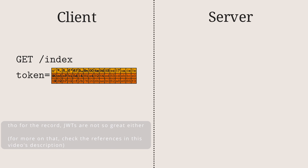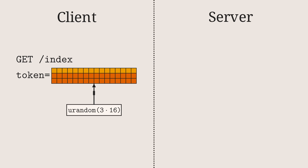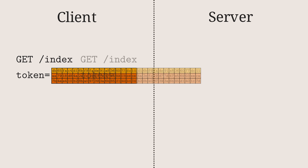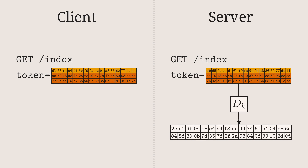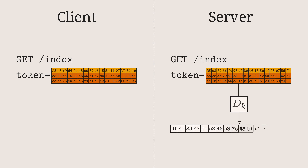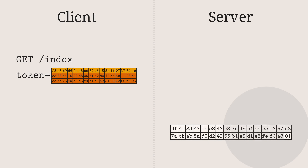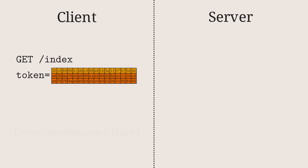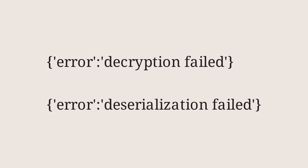What happens if we provide an invalid token? There are two main error cases. The first is when the padding is bad and decryption fails, which is the most likely outcome. The second is when the padding is valid but the data is garbage, causing deserialization to fail. In both cases our query fails. But we're interested in finding out how it failed. If we see 'decryption failed,' we know the padding is invalid. If we see 'deserialization failed,' or no error at all, then the padding is valid. This gives us a padding oracle.